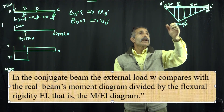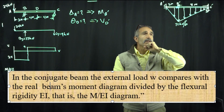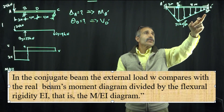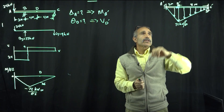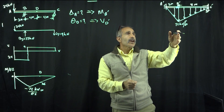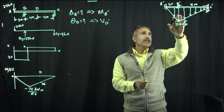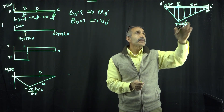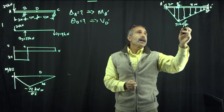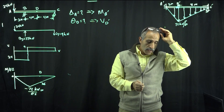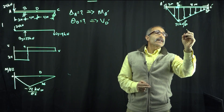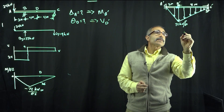When we look at this, it's an indeterminate problem — we have three reactions, so it's tough to solve directly. What we're going to do is break it down at section B'C' first and go ahead and calculate it. We'll draw the free body diagram for this section.